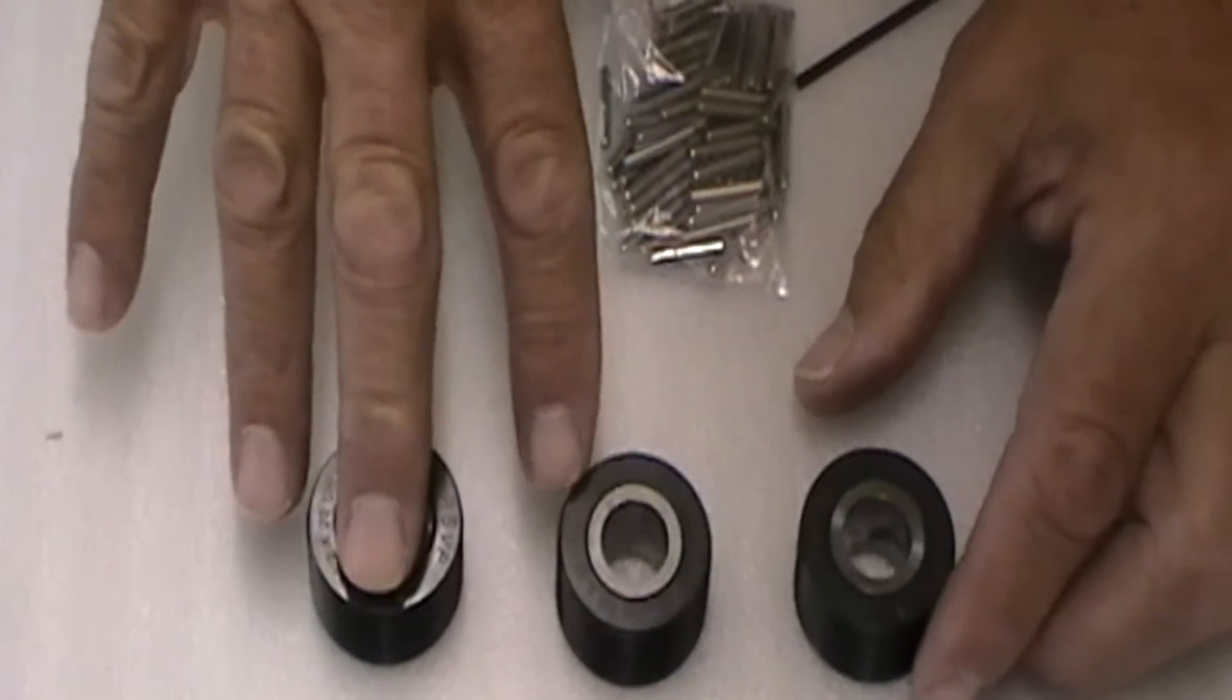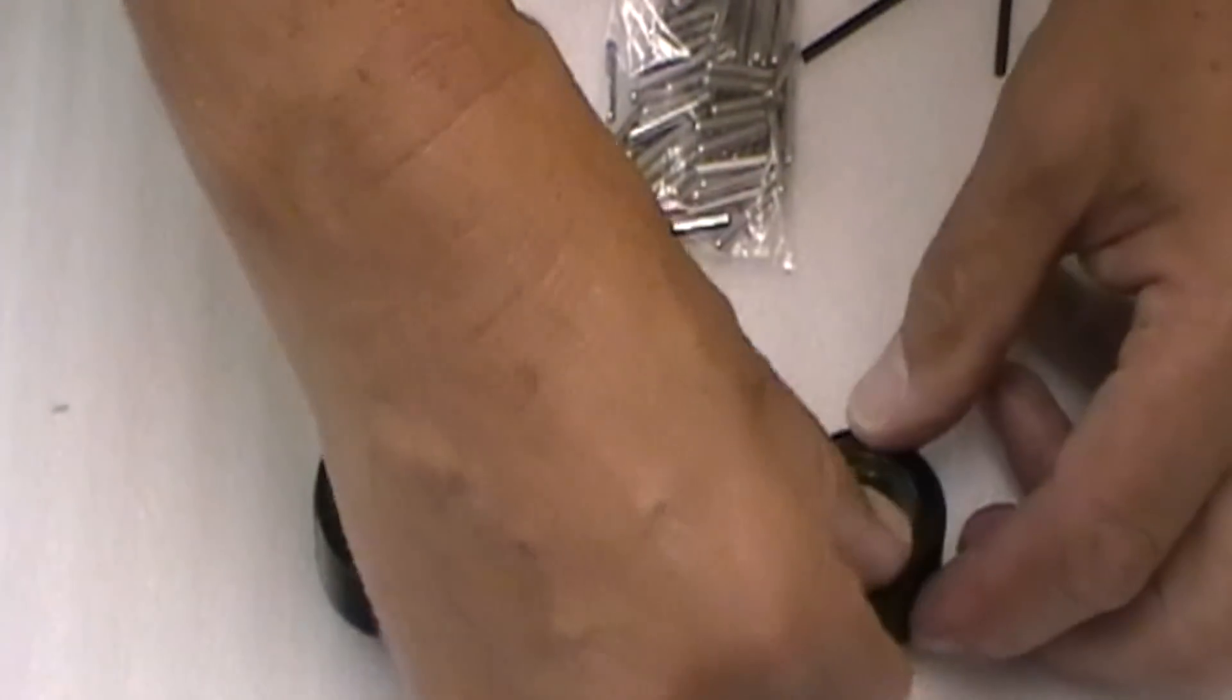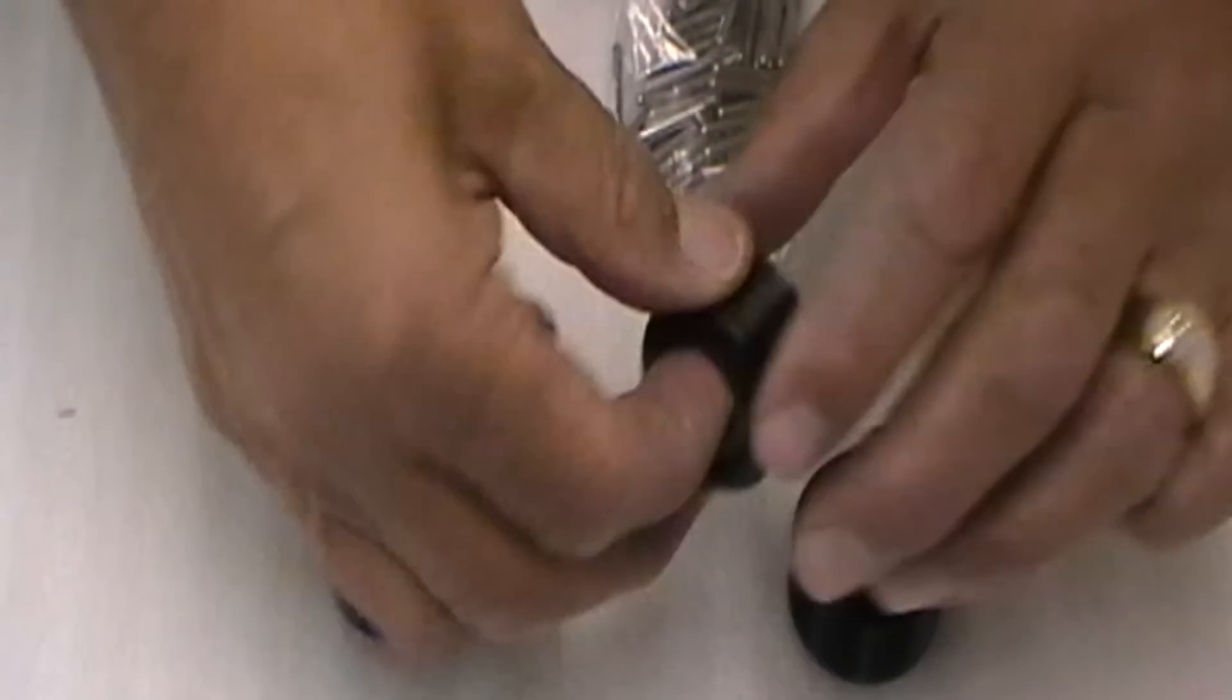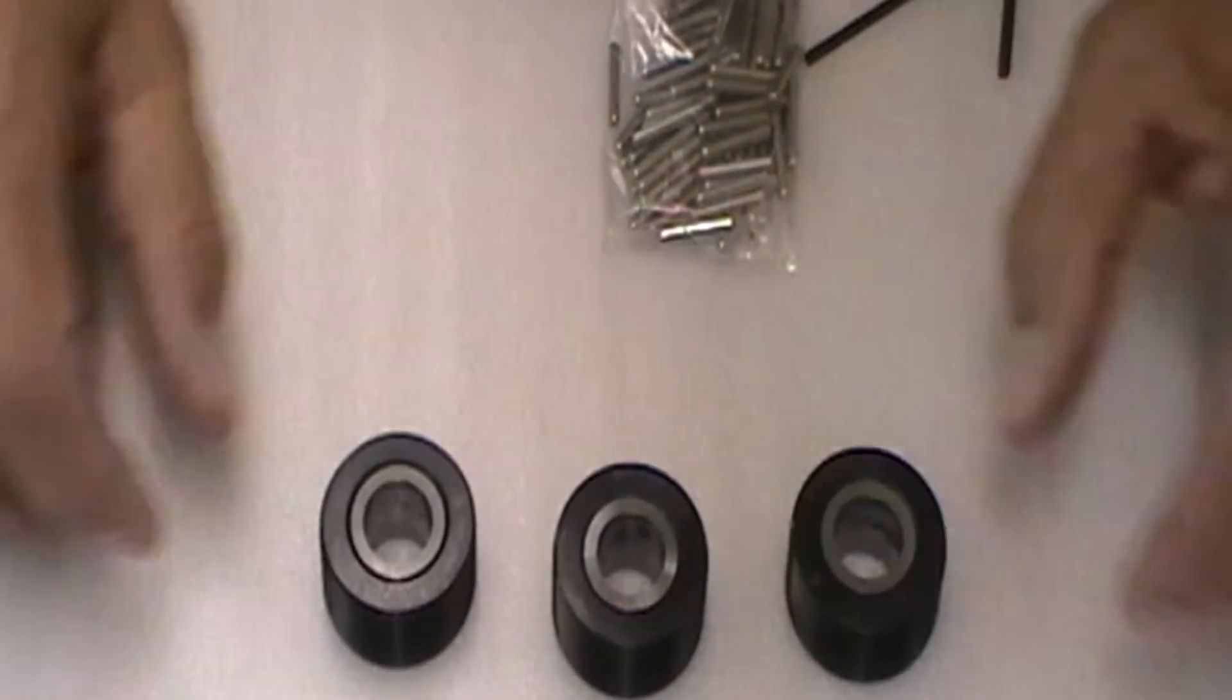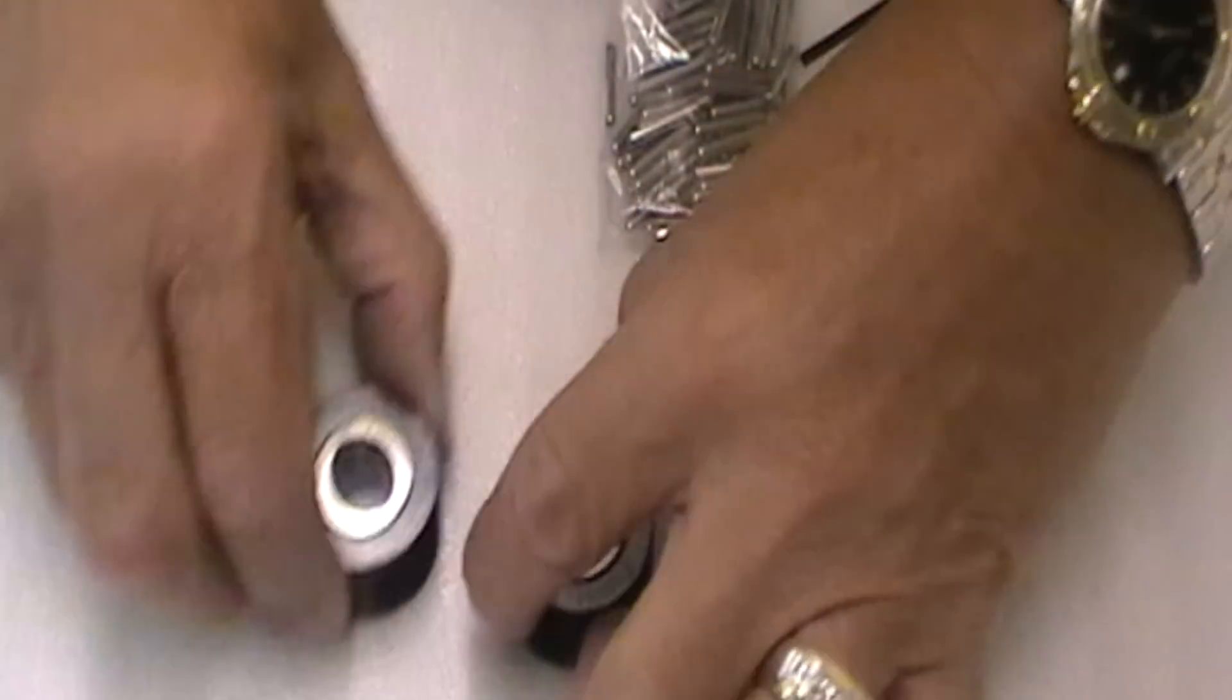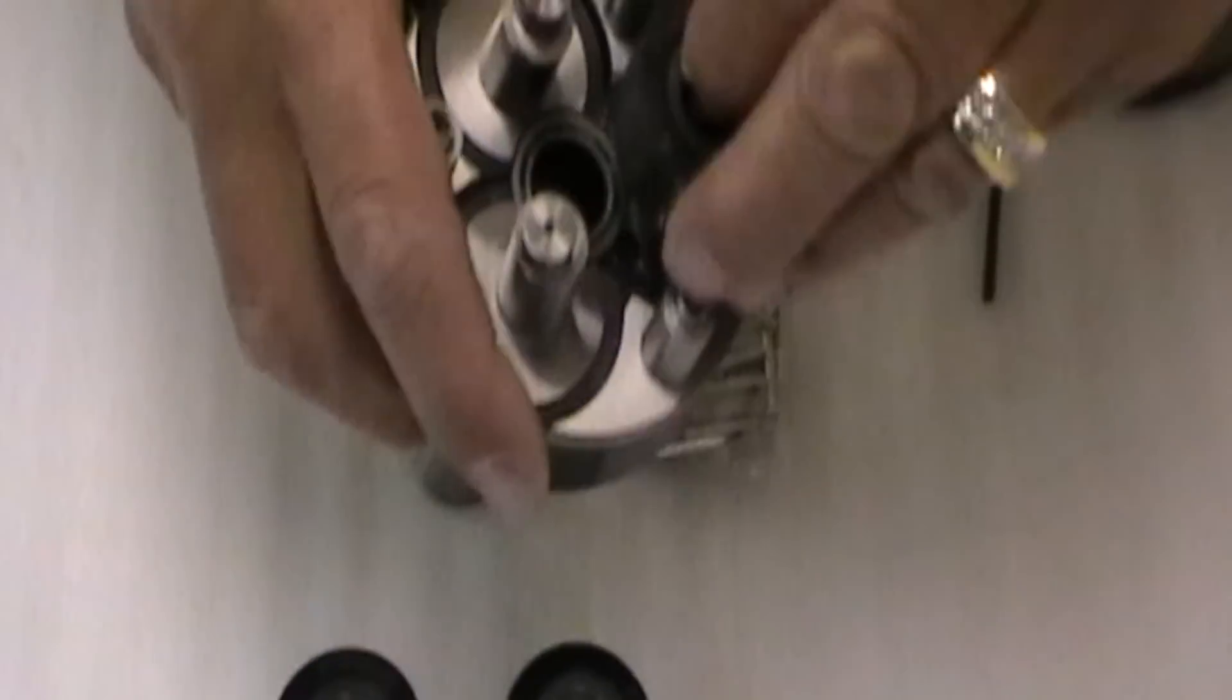When you need to flip your rolls, you must take and move them around. One is A, two is C, and three is B. So you must flip them and then you can reassemble them into your actual thread rolling head.